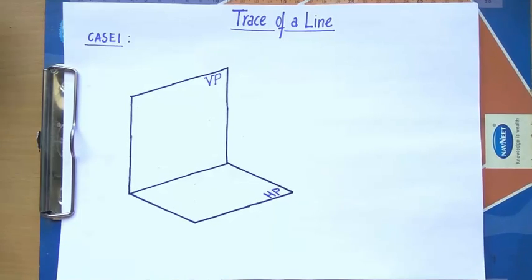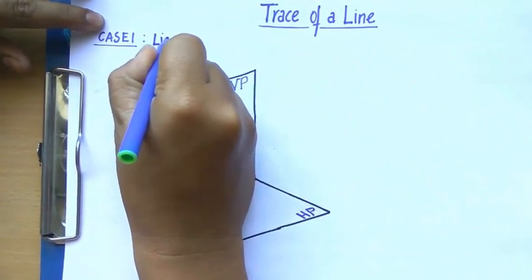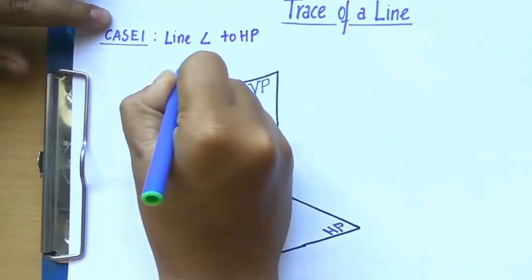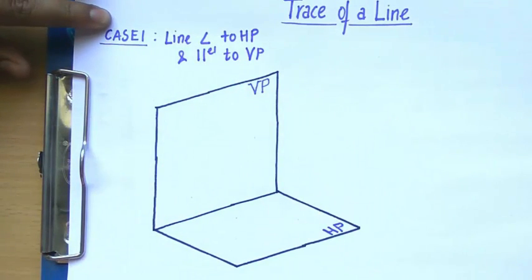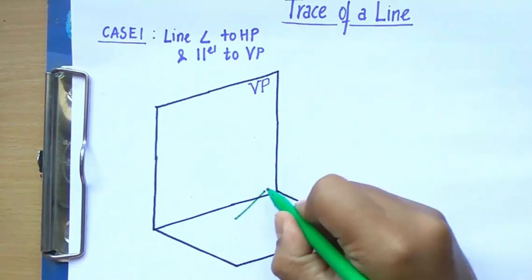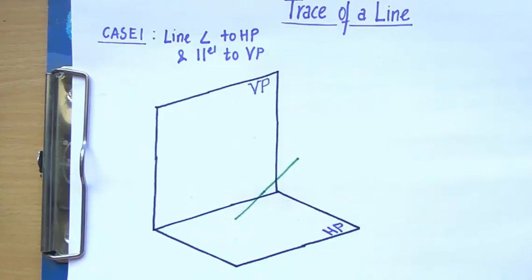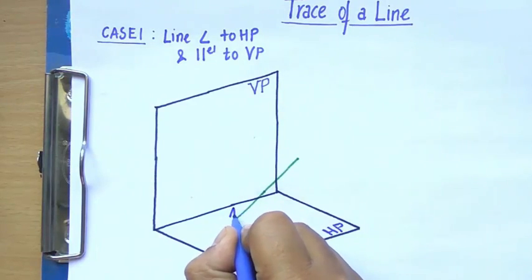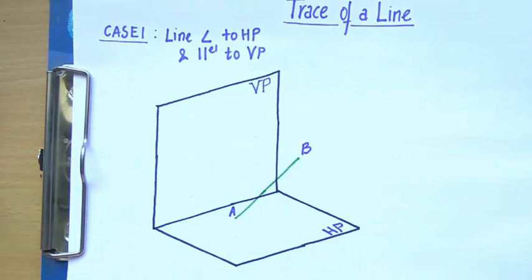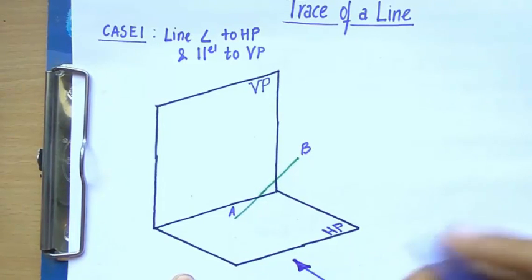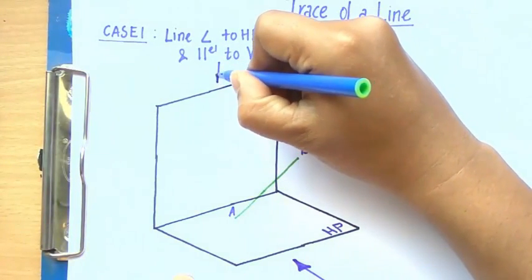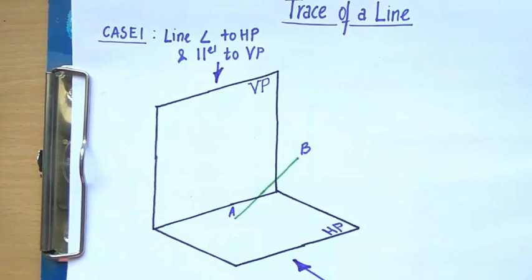Let's begin with case number one: a line that is inclined to HP and parallel to VP, the vertical plane. HP and VP are principal planes. Let us say we have a line AB — point A here and point B here. We are going to look at this line in two different ways: from the front to get the front view, and from the top. The true length of the line can only be seen from the front because the line is inclined to HP and absolutely parallel to VP.